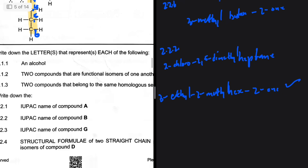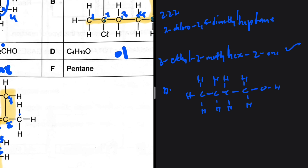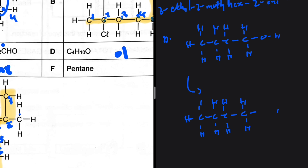Question 2.2.4: draw the structural formula of two straight-chain positional isomers of compound D. Compound D has four carbons and is an alcohol. For positional isomers, we keep the same molecular formula but change the position of the functional group. The hydroxyl group can be on the first carbon or the second carbon — those are the two positional isomers.